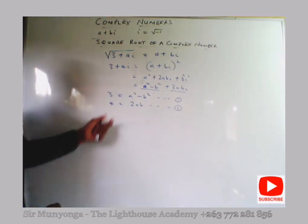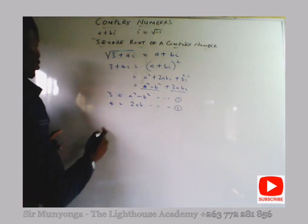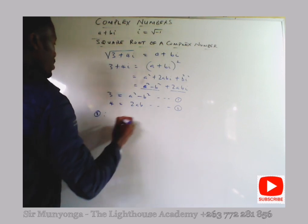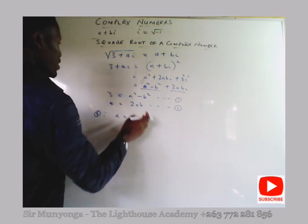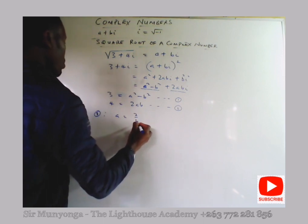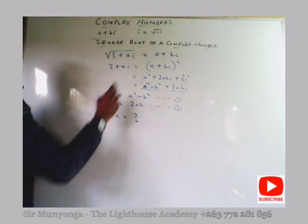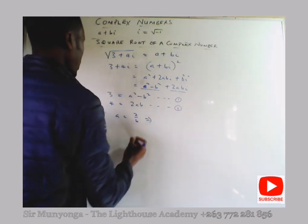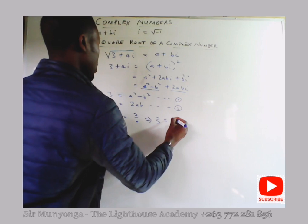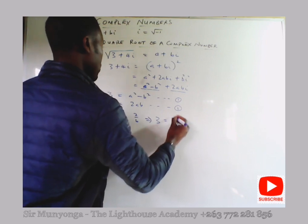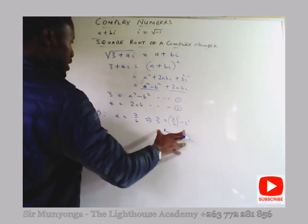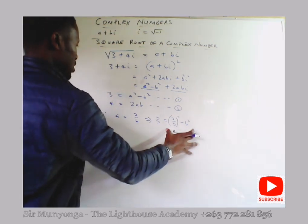We solve these two equations simultaneously. From equation two, a equals 2 over b. Substituting this into equation one gives 3 equals (2 over b) squared minus b squared, so the entire equation is now expressed in terms of b.